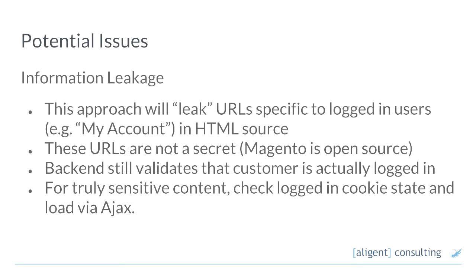Another possible issue is information leakage. The page served from cache has to contain content for both logged-in and logged-out users because we're going to serve it to both. This approach is going to leak those URLs so a logged-out customer who views source is going to see the link to My Account and things that might only be applicable for logged-in customers. Magento is open source though — My Account URLs and so on are in source code. They're public and not secret anyway.